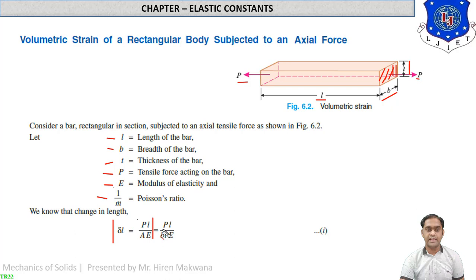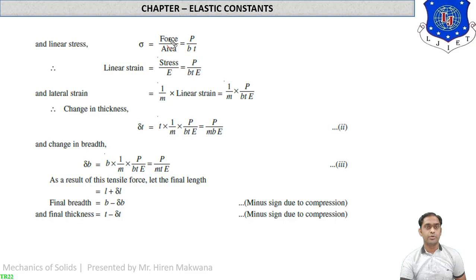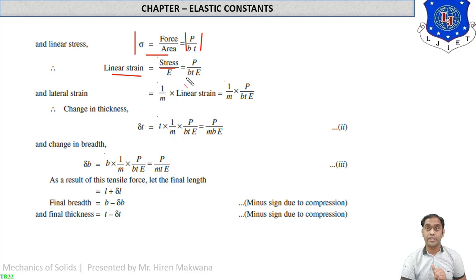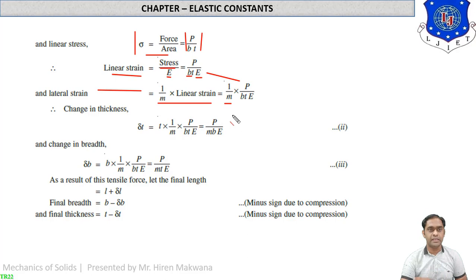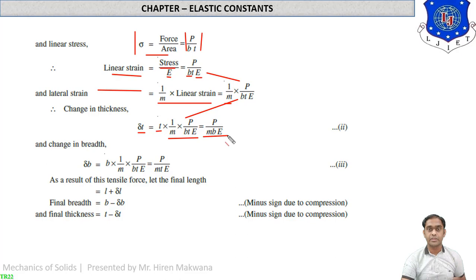Delta-l equals PL / (b×t×E) — equation 1. Stress sigma equals P / (b×t). Linear strain equals sigma / E equals P / (b×t×E) by Hooke's law. Lateral strain equals (1/m) × linear strain equals (1/m) × P / (b×t×E). Change in thickness delta-t equals t × lateral strain equals P / (m×b×E) — equation 2.